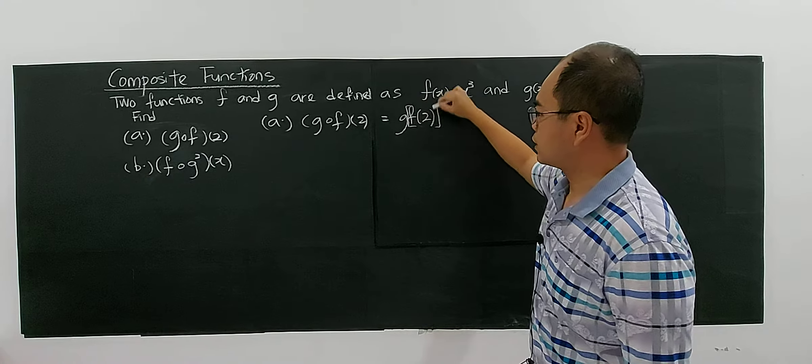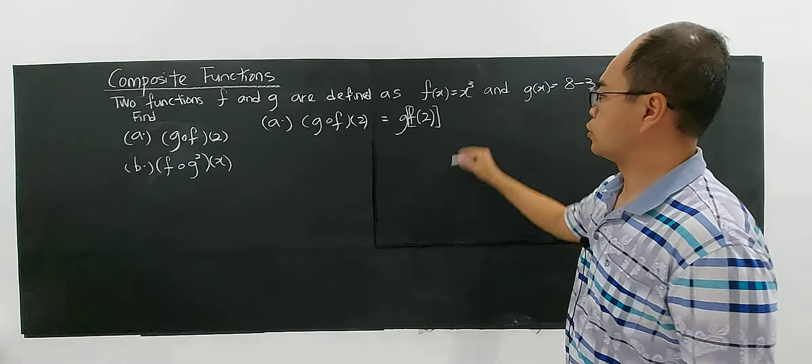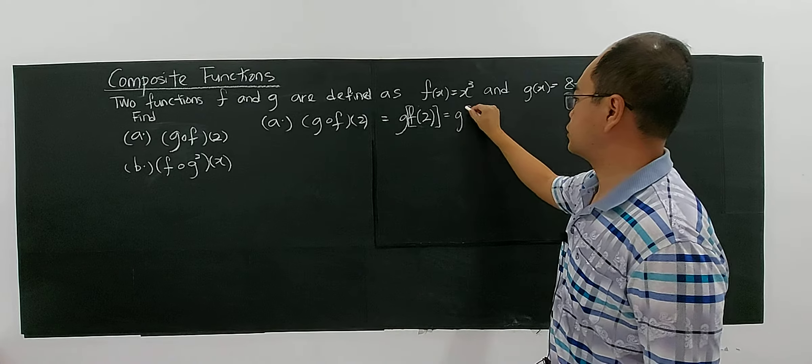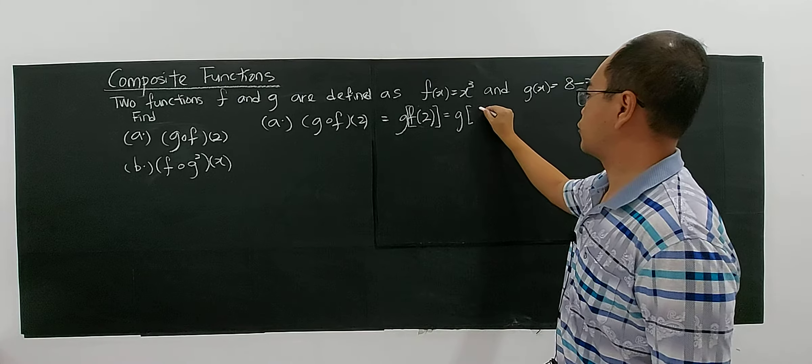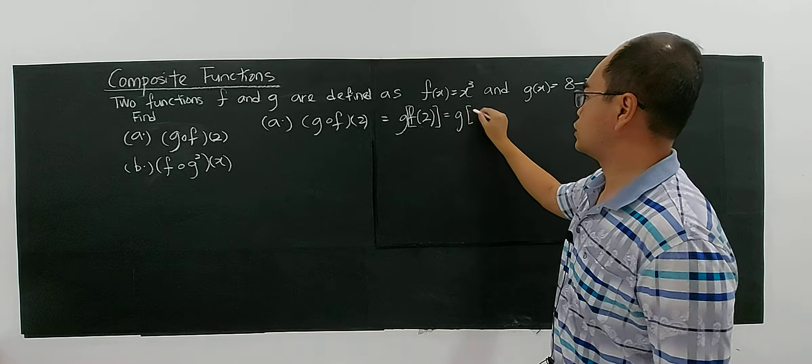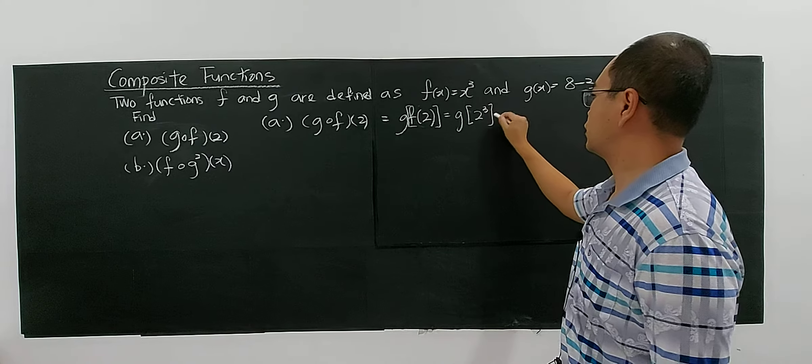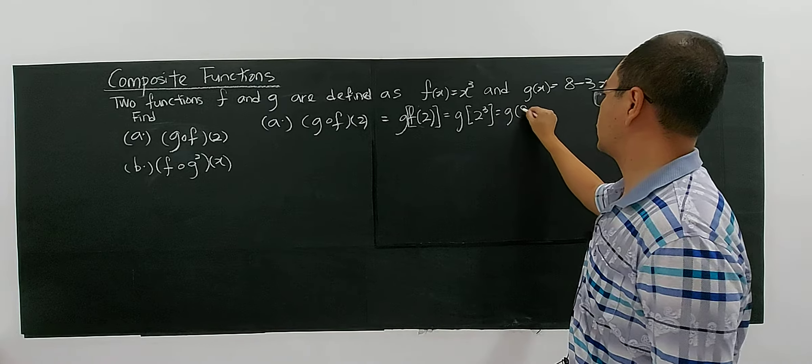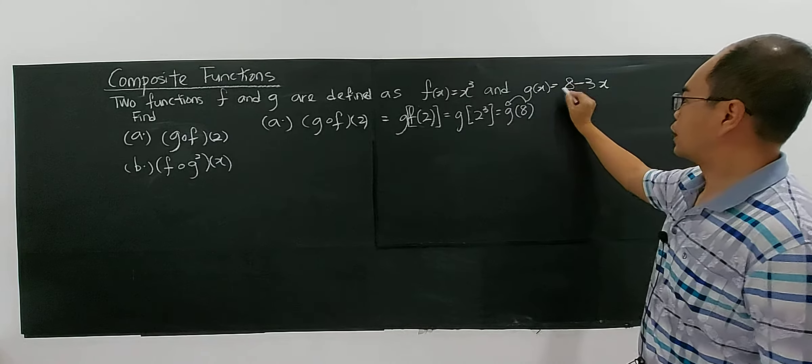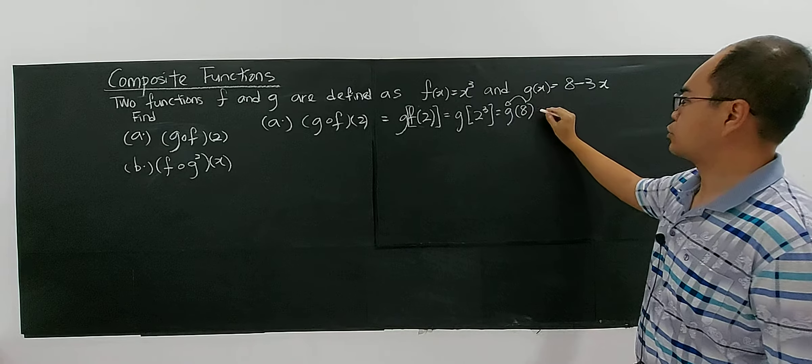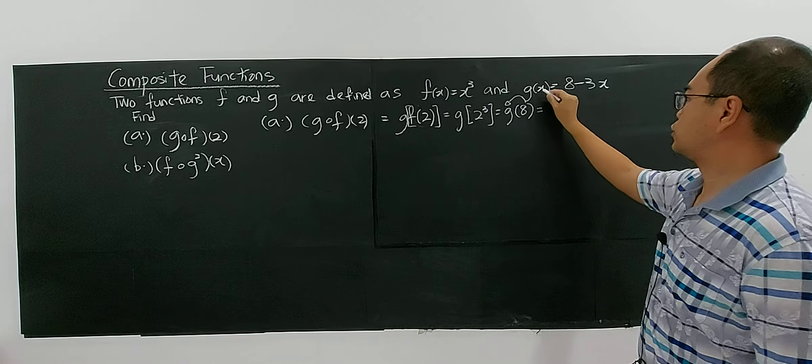Now you have to substitute 2 into f. So f(2) = 2³ = 8, which gives us g(8). 2 to the power of 3 is 8, and this 8 you're going to put in as an input for function g.